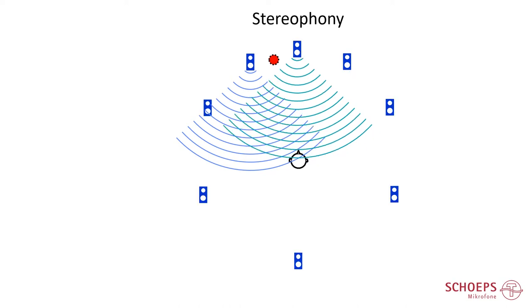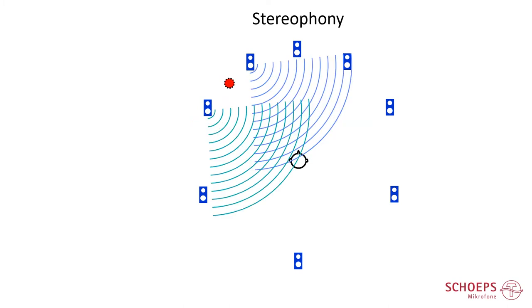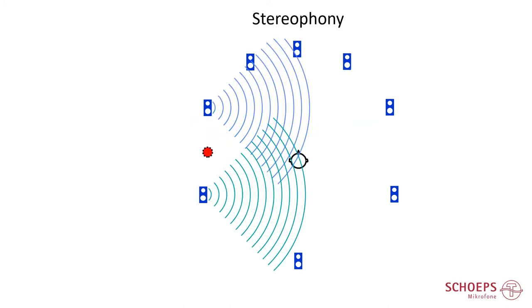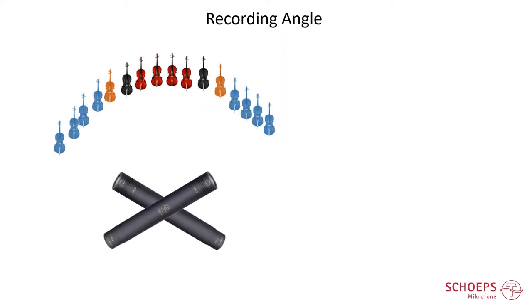In a multi-channel setup we treat each loudspeaker pair separately. For example, here we have the pair between the left and center loudspeaker — this is a loudspeaker base where a phantom source is created. We also have the wide-left and left loudspeaker pair, and so on. To create a certain image on this loudspeaker base, the same theory is applied in terms of time and level differences, and how to create that image is well-known theory.